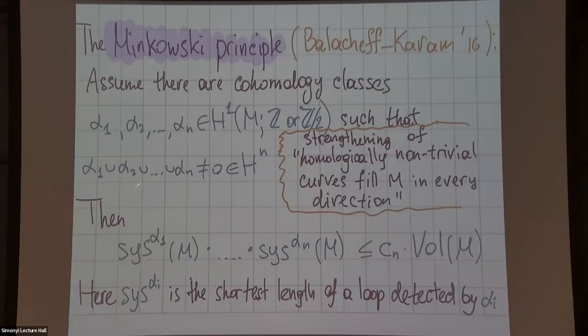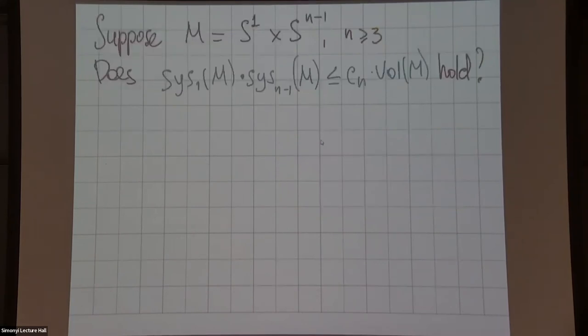It was actually a hope of Gromov from early 90s to have some kind of implication where some kind of non-triviality in cup products would imply maybe some kind of systolic inequality like this. This is one of the manifestations where this is actually true. But let's ask the same question for non-essential manifolds, for example S1 cross S2 or S1 cross S3.